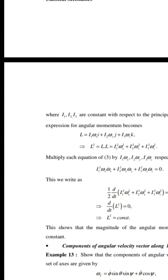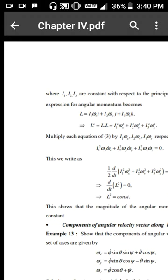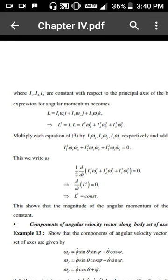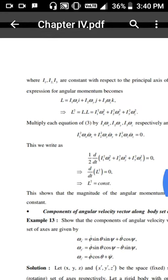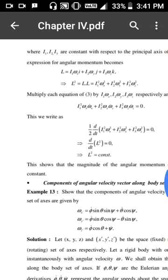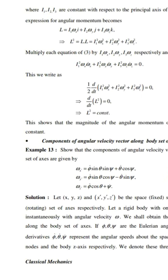Then |L|² = L·L = I₁²·ωx² + I₂²·ωy² + I₃²·ωz². Multiplying each Euler equation by I₁·ωx, I₂·ωy, I₃·ωz respectively and adding shows that d/dt(|L|²) = 0, so |L|² = constant. This shows that the magnitude of the angular momentum of the rigid body is constant throughout the motion.